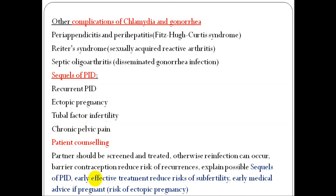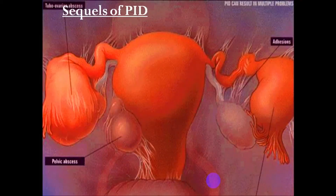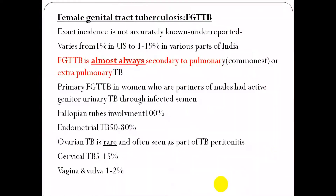Complications of upper genital tract infection include PID and its sequelae: recurrent PID, ectopic pregnancy, tuberculosis, and chronic pelvic pain. Patient counselling should cover: screening and treating partners to prevent re-infection, barrier contraception to reduce risk of recurrent infection, early effective treatment to reduce risk of infertility, and early medical advice if pregnant due to risk of ectopic pregnancy from PID sequelae, which may lead to ectopic pregnancy, infertility, or adhesions.